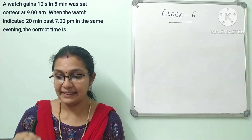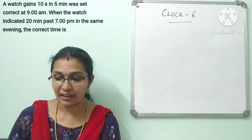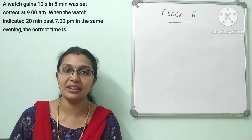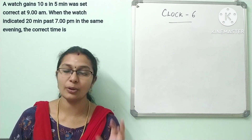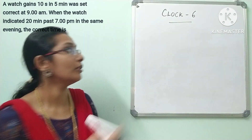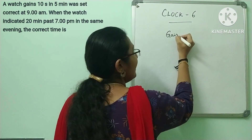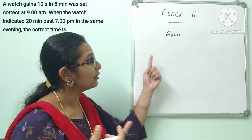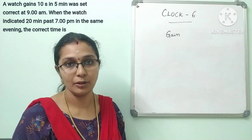Third question: A watch gains 10 seconds in 5 minutes. It was set right at 9 am. In the evening of the same day, when the watch indicates 20 minutes past 7 o'clock, the true time is what? The question is clear — this is a gain concept.